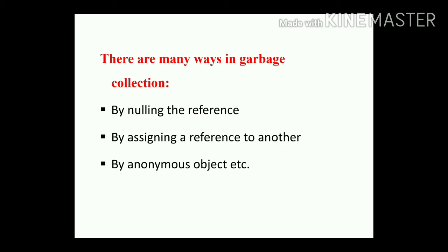There are three ways to make an object eligible for garbage collection: first, by nulling the reference; second, by assigning a reference to another; third, by using an anonymous object.